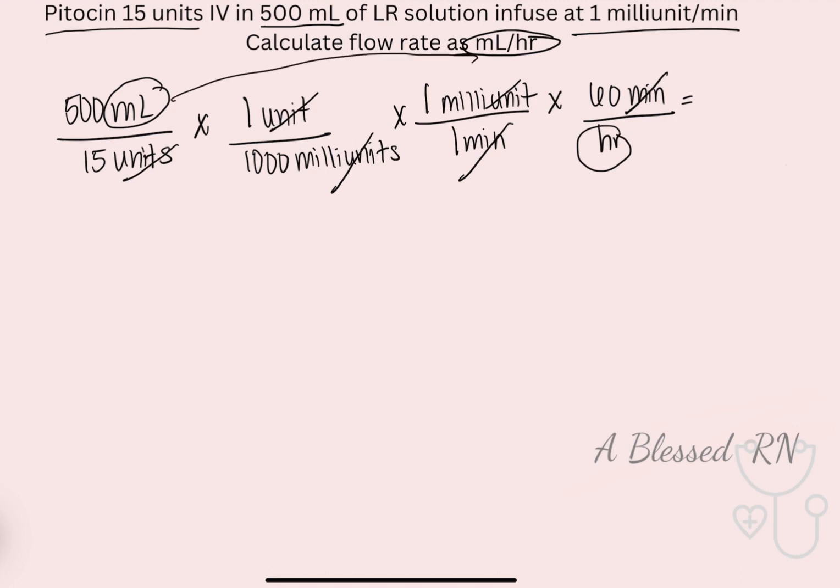So now we have to multiply across the top, multiply across the bottom and divide. So it's 30,000 divided by 15,000, which would be 2 mLs per hour.